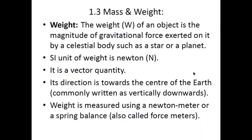The weight of an object is the magnitude of gravitational force exerted on it by a celestial body such as a star or planet. When gravitational force acts upon a mass, the resultant force produced is called the weight of the object. The SI unit of weight is the newton (N), and it is a vector quantity — its direction is always towards the centre of the earth or the centre of the object applying the gravitational force, commonly written as vertically downwards.